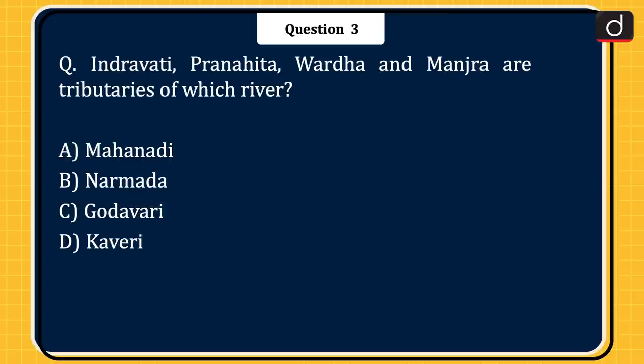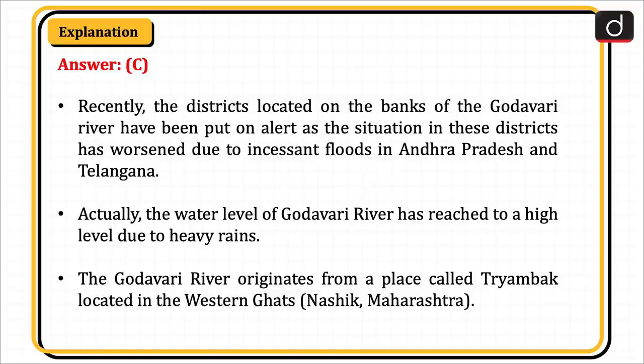Next question: Indravati, Pranhita, Vardha, and Manjara are tributaries of which river — Mahanadi, Narmada, Godavari, or Kaveri? The correct answer is option C, Godavari. Recently, the districts located on the bank of the Godavari river have been put on alert as the situation has worsened due to incessant floods in Andhra Pradesh and Telangana. The water level of the Godavari river has reached a high level due to heavy rains. The Godavari river originates from a place called Triambak located in the Western Ghats, Nasik, Maharashtra.